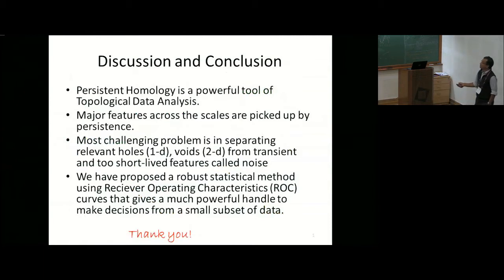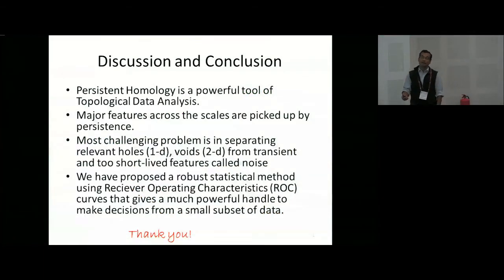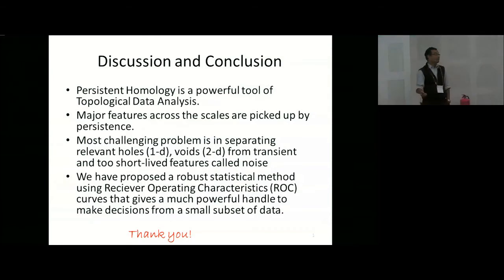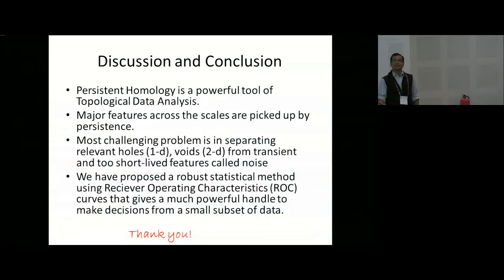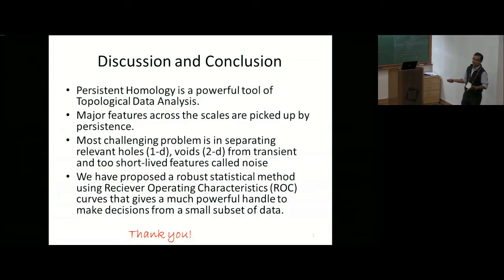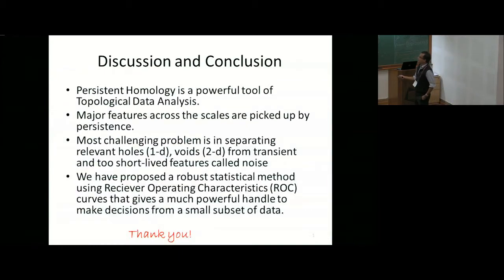I want to conclude by saying that persistent homology is a powerful tool for topological data analysis. The main power is that across scales, pH can pick up features. The most challenging problem is separating relevant features from irrelevant ones. To overcome this, we have proposed — to the best of our knowledge, this is not yet in the literature because it's very current — a statistical approach using ROC curves, and I think this is going to work very well. It's an ongoing work and soon we will submit it. Thank you.